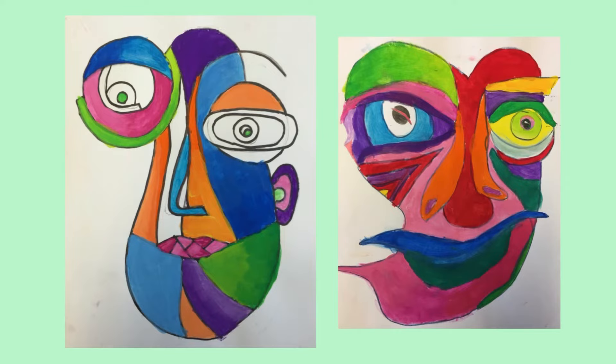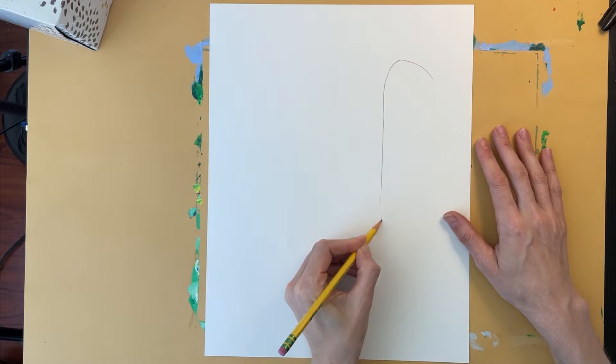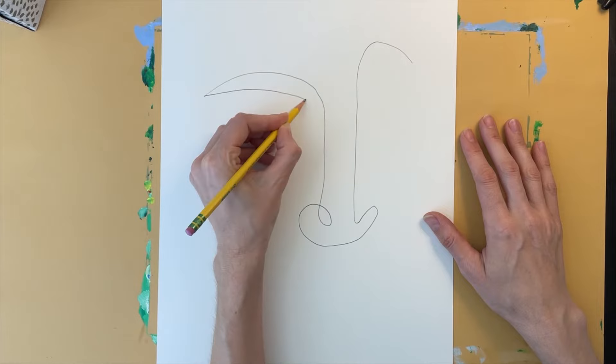To get started I'm grabbing an 11 by 14 inch piece of multimedia paper. I'm going to start by drawing an eyebrow line that connects to the nose. On the bottom I'm adding the nostrils. Now another brow line that's lower down.